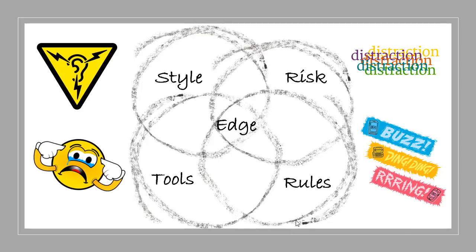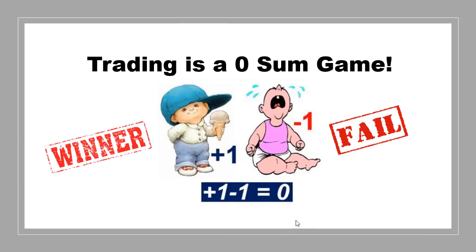One of the first things to think about when you think about trading is that trading is a zero-sum game. That means there's one winner and one loser. The only way we can be winners is by taking money away from somebody else. Institutions are working to take money away from us.